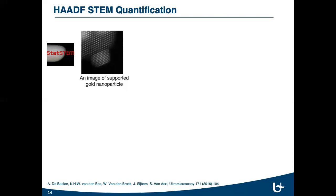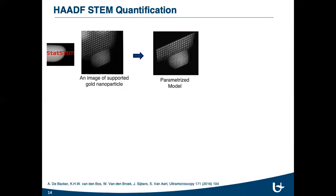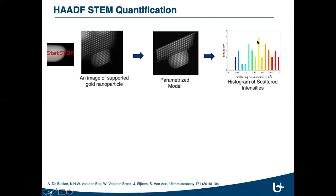For the quantification, StatSTEM is used, which was developed by Annick de Becker. Here you can see an averaged image of supported gold nanoparticles. In the statistical analysis, firstly, the atomic columns are modeled as Gaussian function. From the model, we estimate the scattering cross-sections. In an ideal situation for atom counting, we will have discrete peaks in the histogram. And each component here would correspond to the set of atomic columns having the same number of atoms in it. For example, the third component here corresponds to three atoms in the atomic column, which are colored as light blue in the image.